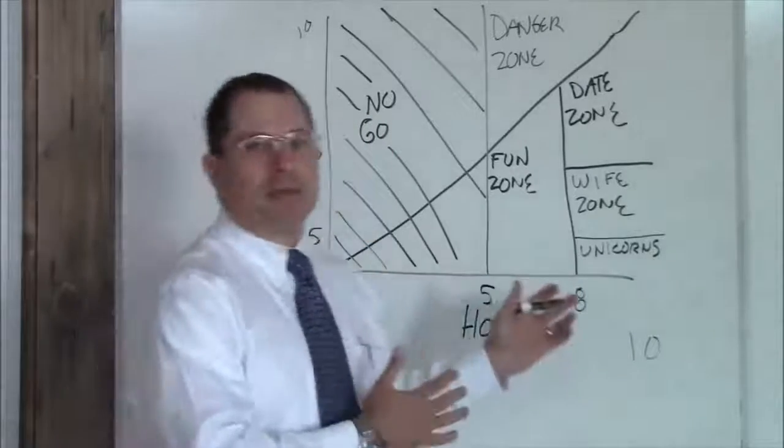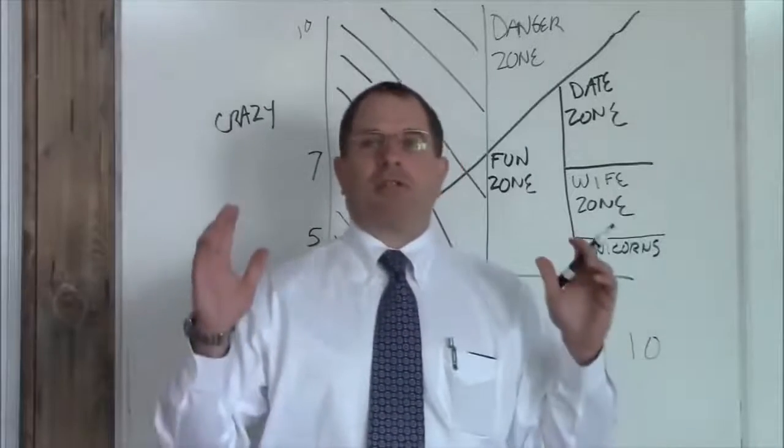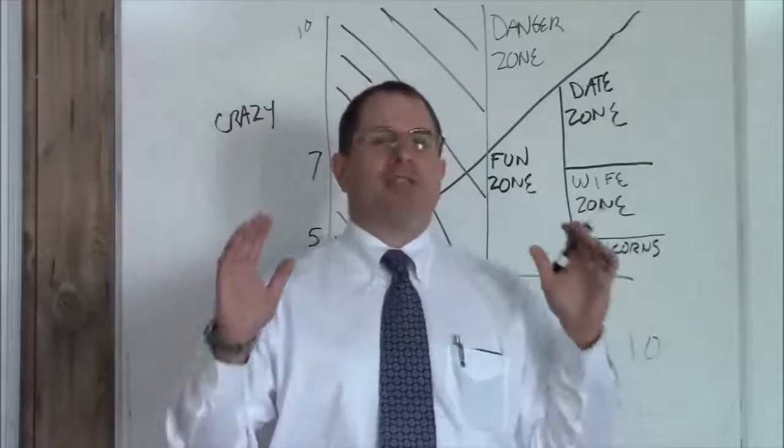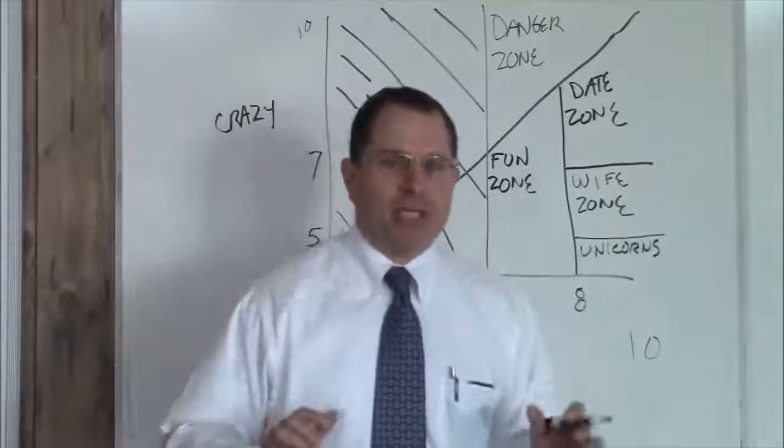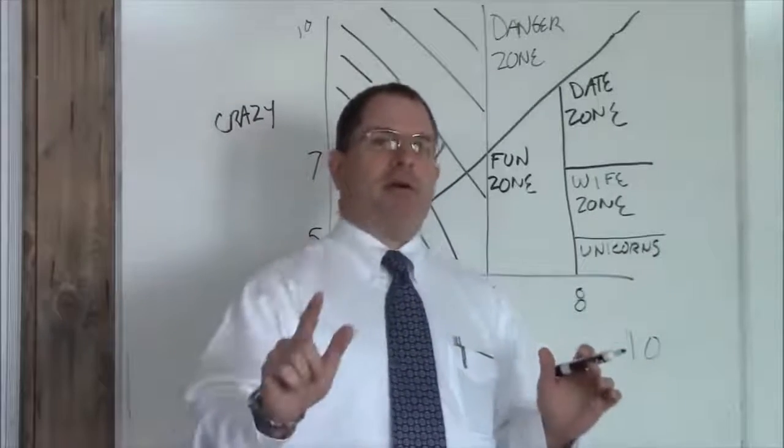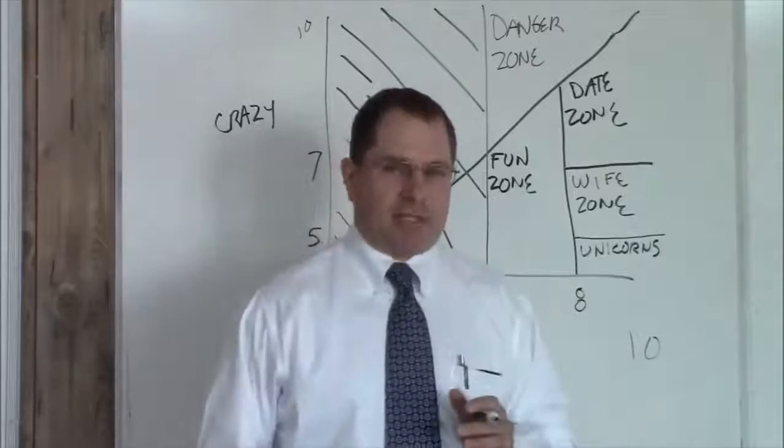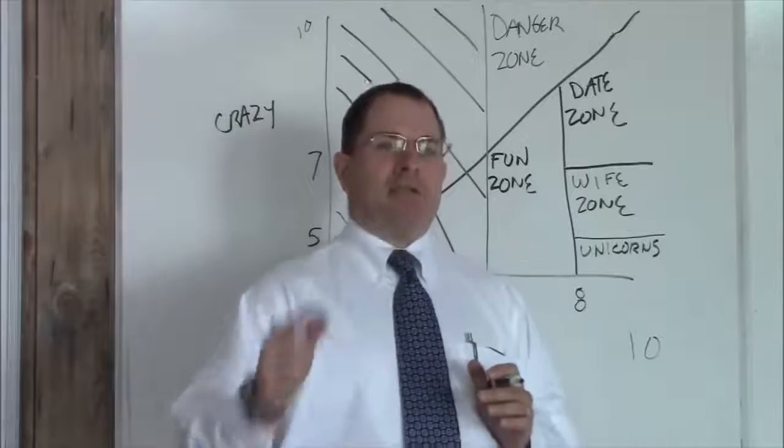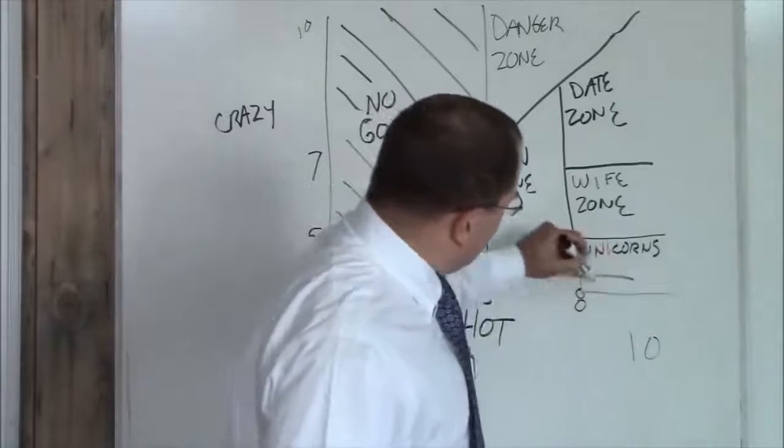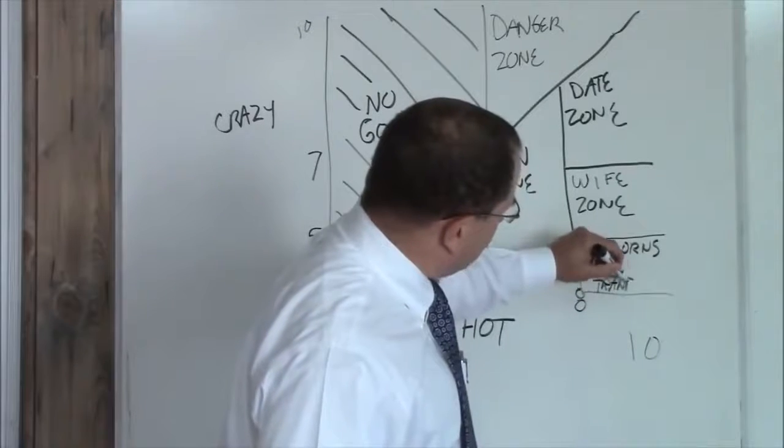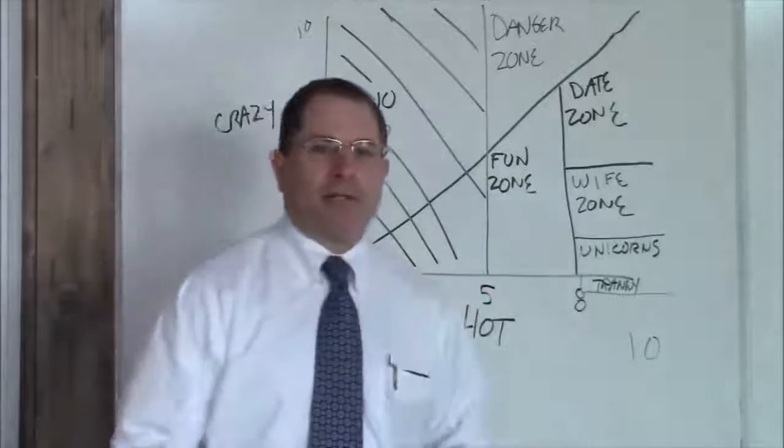So I was explaining this to a guy one time, and he said, wait a minute. I met this girl, and she's like smoking hot. She's like at least a 9, and she's chill. She's totally cool. She's like not even a 3 crazy. I said, you're telling me you've met a girl. She's a 9 hot, and she's like a 2 or a 3 crazy. He said, yeah, man. I like her a lot. I said, you should be careful. That's a dude. You're talking to a tranny. So you got to be careful, because down here, below a 4 crazy, and above an 8 hot, you're probably talking to a dude.